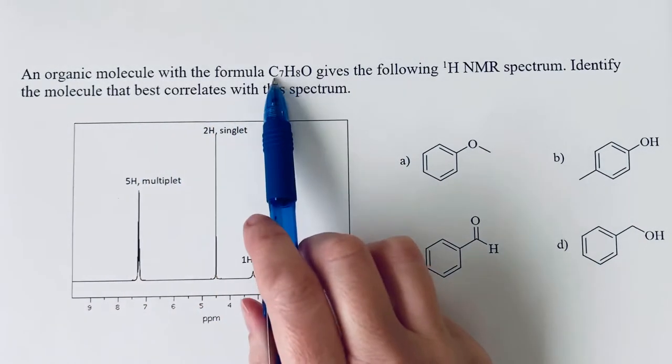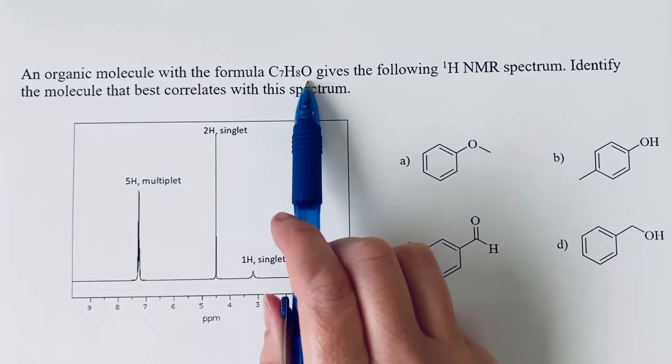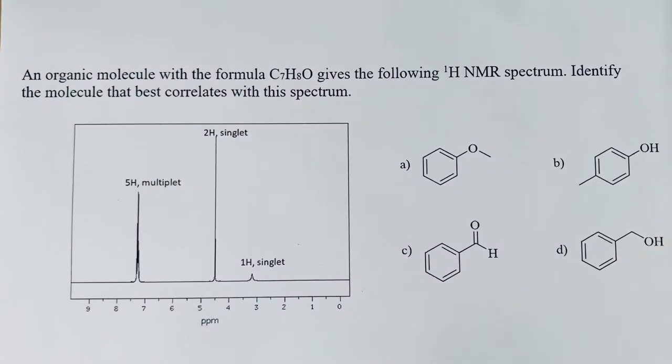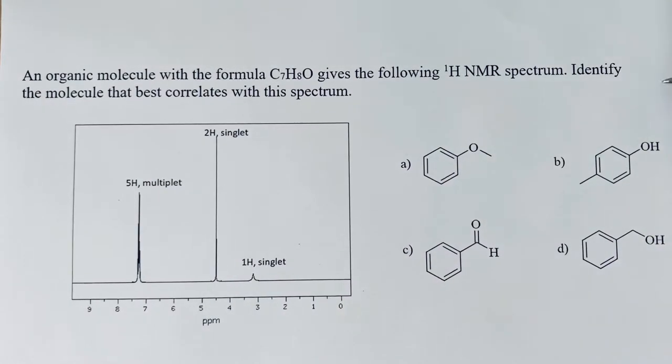An organic molecule with the formula C7H8O gives the following proton NMR spectrum. We want to identify the molecule that best correlates with this spectrum.